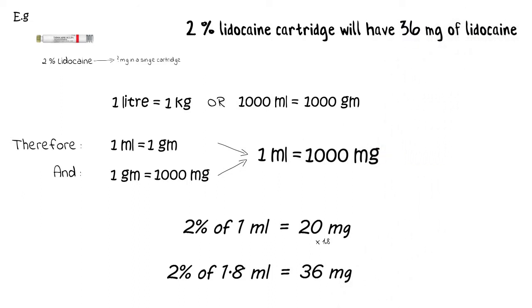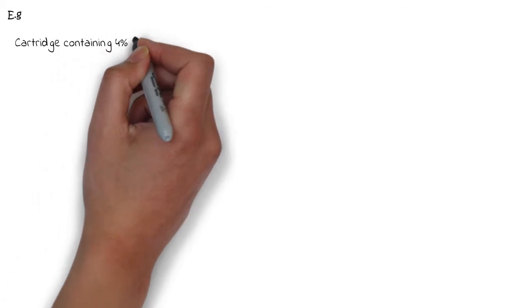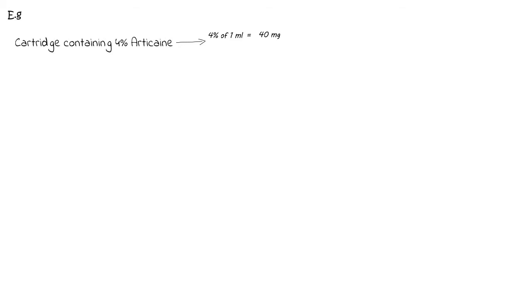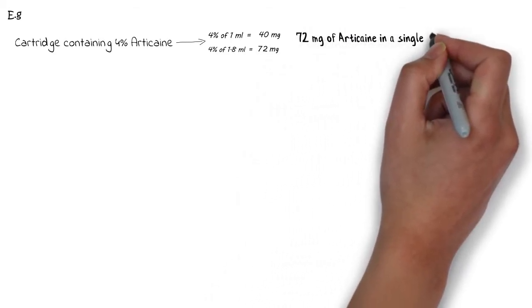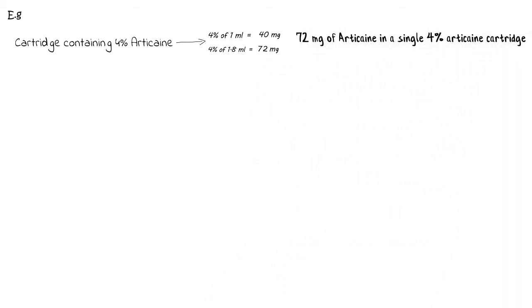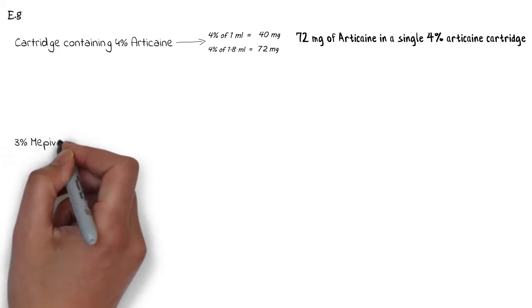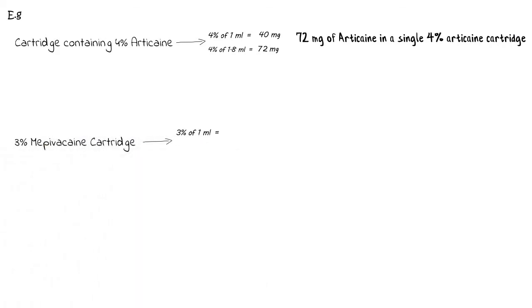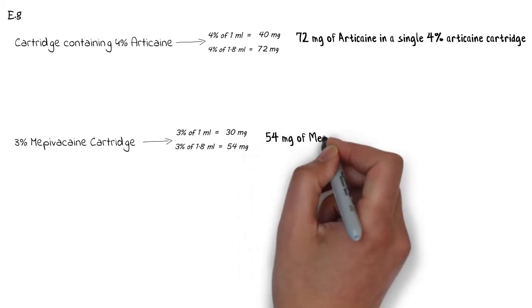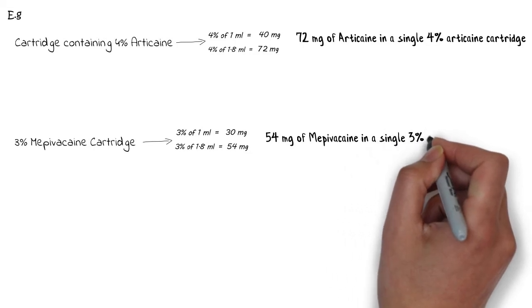A similar calculation can be done for any cartridge containing any specific percentage of a local anesthetic agent. For example, a cartridge containing 4% articaine: 4% of 1 ml is 40 mg, therefore 4% of 1.8 ml equals 72 mg. So 72 mg of articaine is present in a single cartridge of 4% articaine. Similarly, a 3% mepivacaine cartridge gives 30 mg per ml, meaning 54 mg of mepivacaine is present in a single cartridge of 3% mepivacaine.